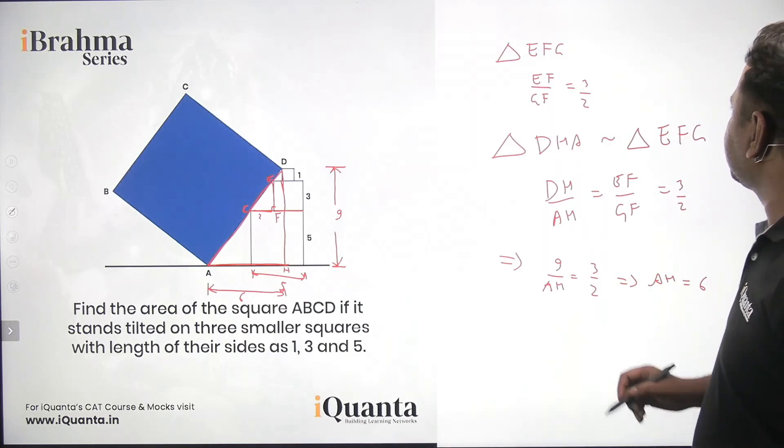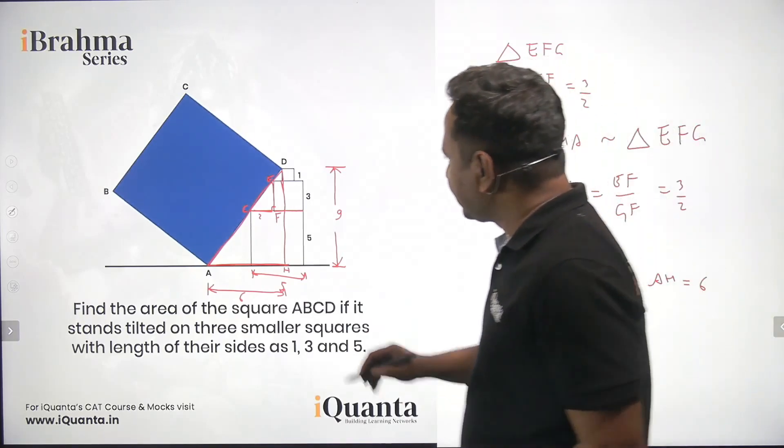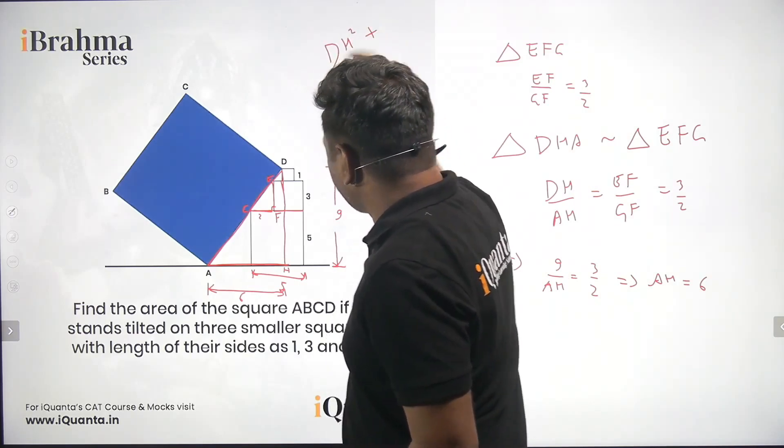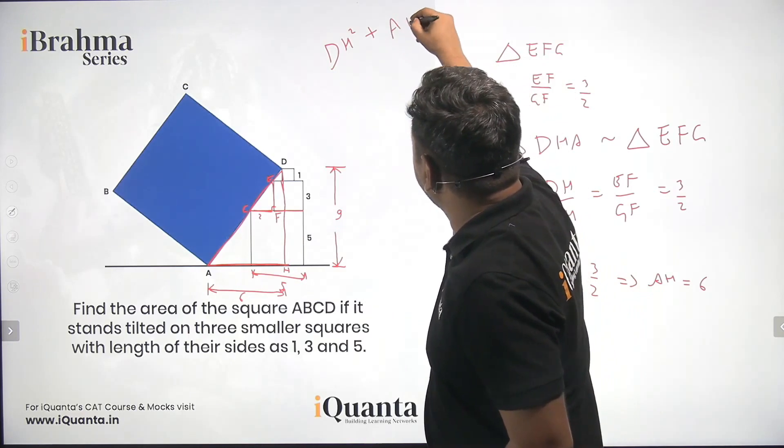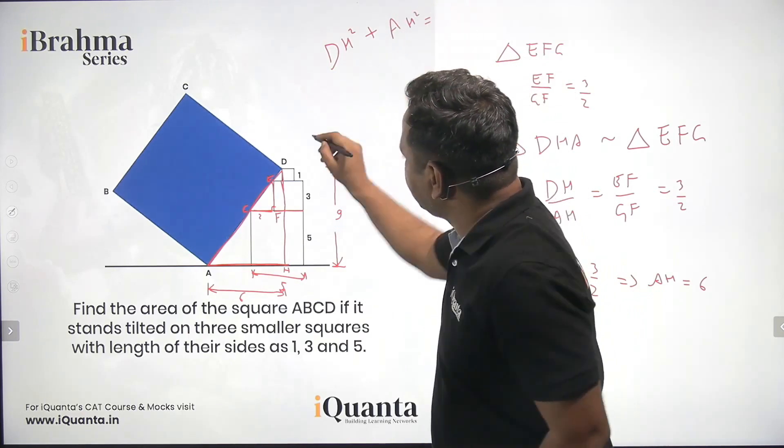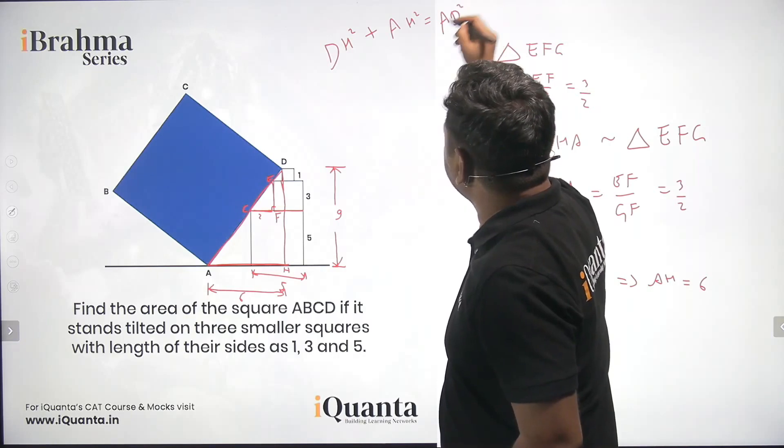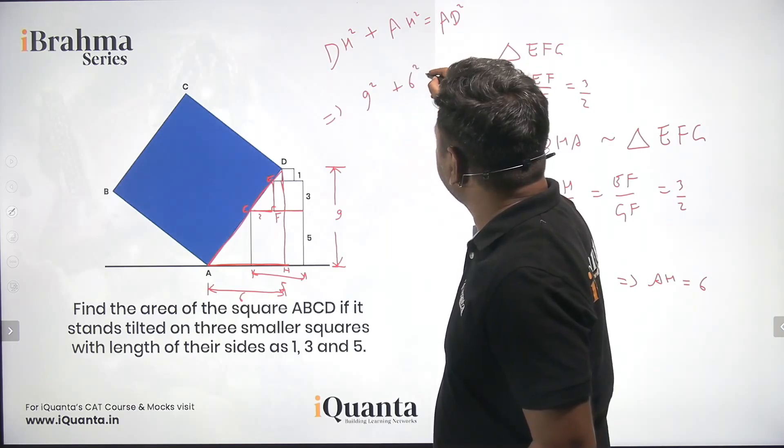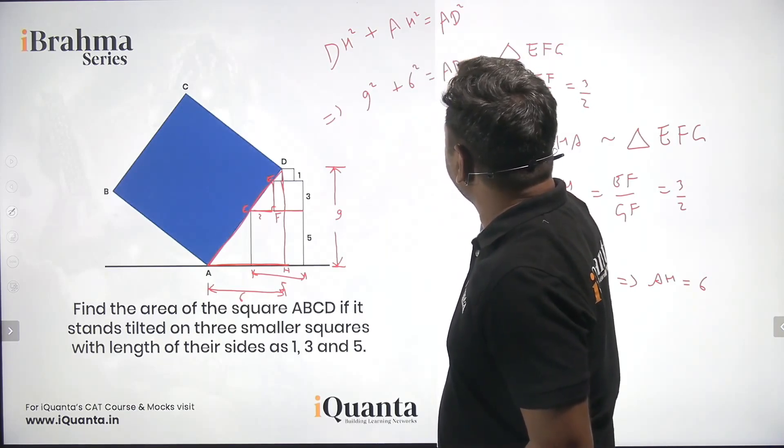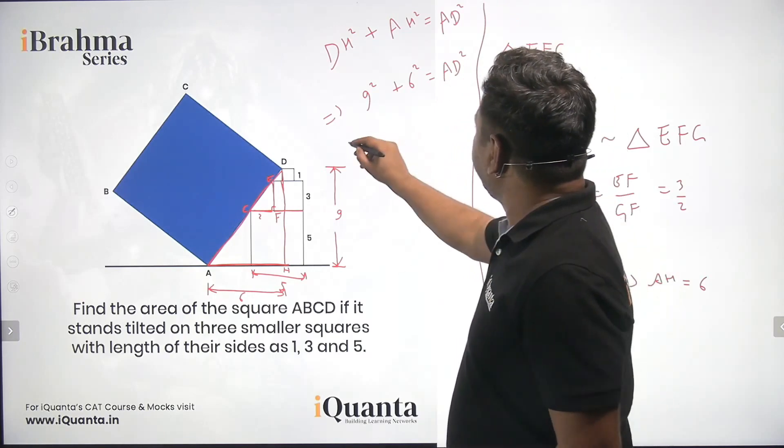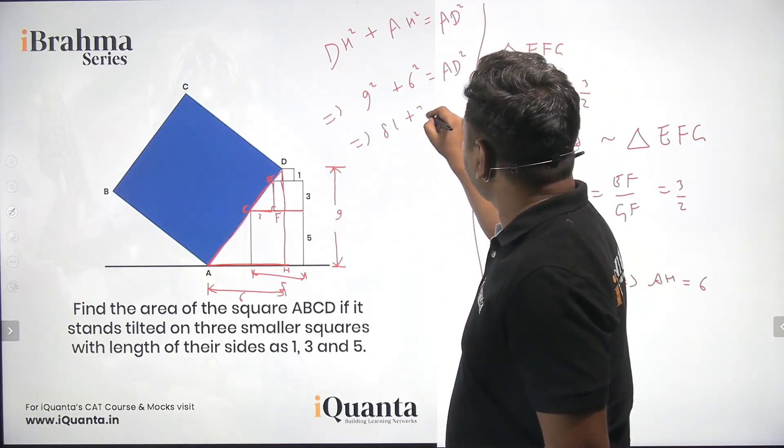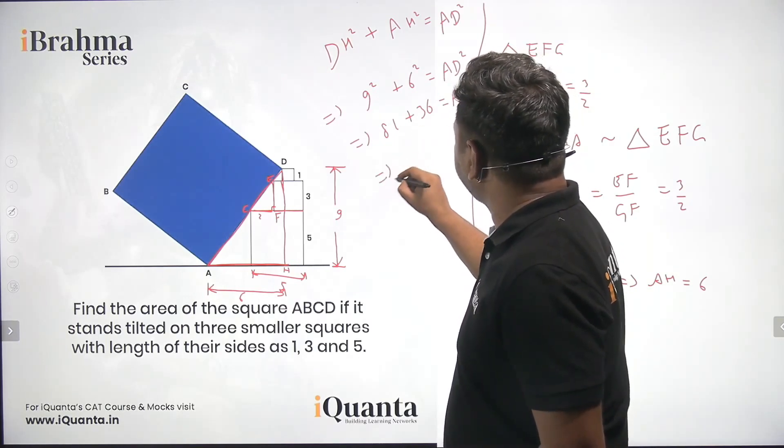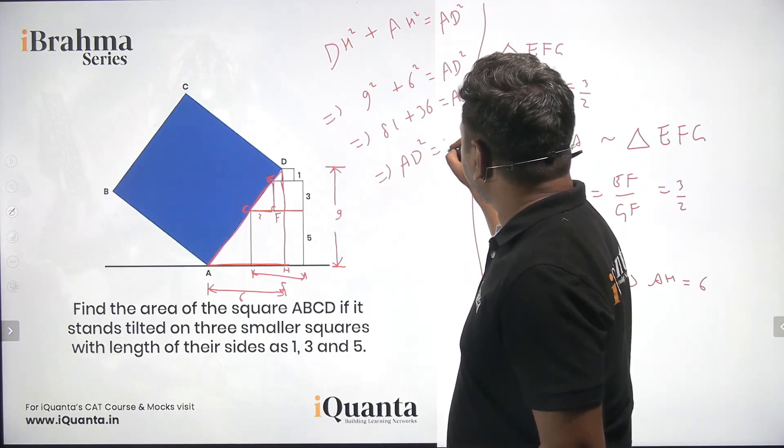So applying the Pythagoras theorem, we can say that DH square plus AH square is equal to AD square. Let us put in the values. DH is 9, AH is 6 and now this will be equal to 81 plus 36. This will be the value of AD square. Or if we calculate this, we'll get AD square is equal to 117.